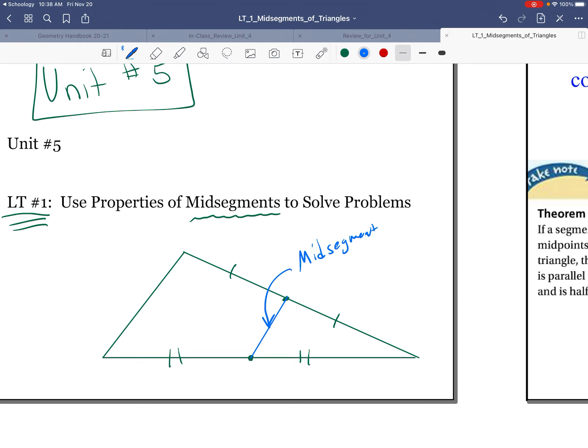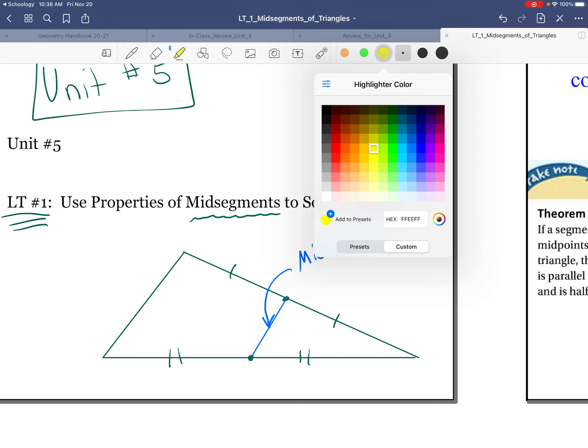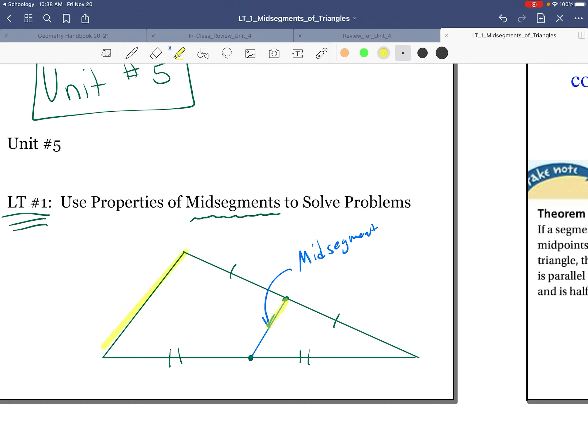Two properties follow about the mid-segment. One is that the mid-segment will be parallel to one of the bases of the triangle. Obviously it's the third side that does not have the midpoint. So those two lines will be parallel.